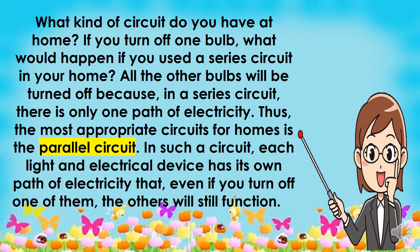If you turn off one bulb, what would happen if you use a series circuit at home? All the other bulbs will be turned off because in a series circuit, there is only one path of electricity. Thus, the most appropriate circuit for homes is a parallel circuit. In such a circuit, each light and electrical device has its own path of electricity, so even if you turn off one of them, the others will still function.